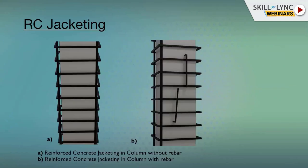RC jacketing can be done in two ways: without rebar or with rebar. For example, if an existing column is 300×300mm, you cannot destroy it — instead, you increase its size by adding a concrete mesh jacket. If more than 70% of the column is already damaged, rebar is mandatory: drill, use epoxy, insert rebars along the column to make it firm, then apply concreting.